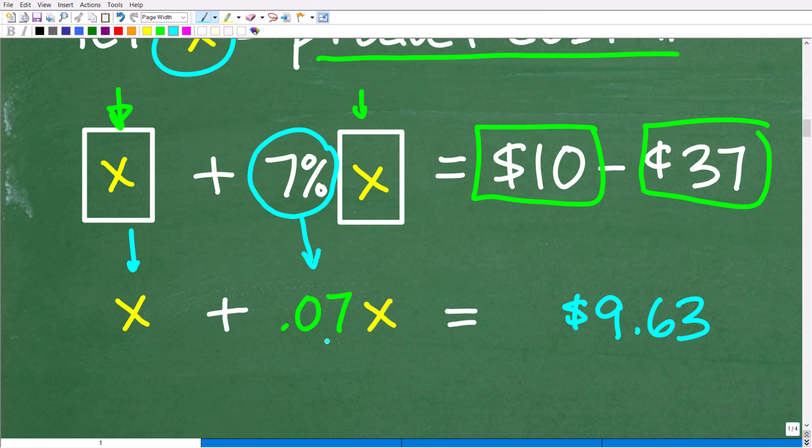We need to change this percent to a decimal. So now we have 0.07 times the cost of the product, which of course is X. So this is our total amount for this transaction. And we know it's equal to $9.63. So what we have here is a basic linear equation. X plus 0.07X is equal to 9.63. And the next step here is to solve this equation for X.